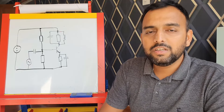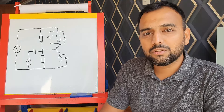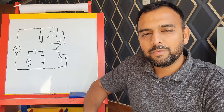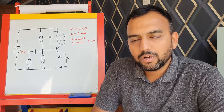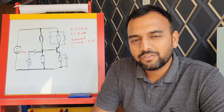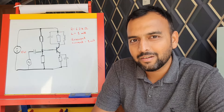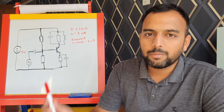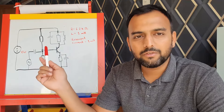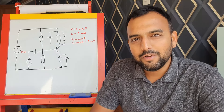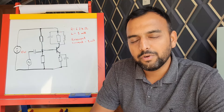We know we need a quiescent current of 1 milliamp — that's the current flowing through this path when there's no input signal, when it's just idling. We can work out the components in different orders, but we need to calculate the emitter resistor before we calculate the potential divider for the biasing voltage.